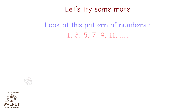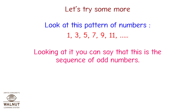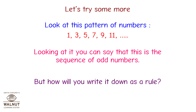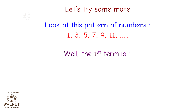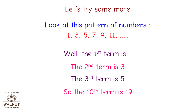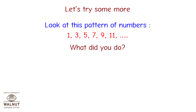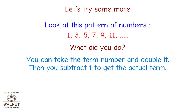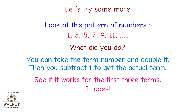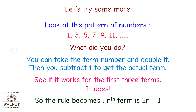Look at this pattern of numbers: 1, 3, 5, 7, 9, 11 and so on. You can say that this is the sequence of odd numbers. The first term is 1, the second term is 3, the third term is 5, so the tenth term is 19. You take the term number and double it, then subtract 1 to get the actual term. Check it for the first three terms — it works! So the rule becomes: nth term is 2n minus 1.